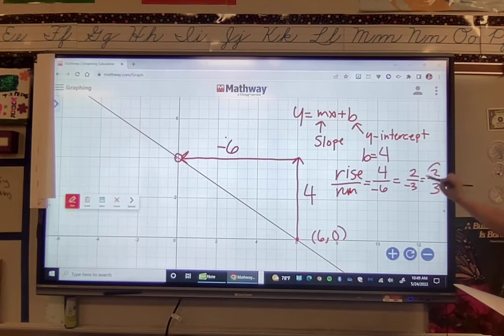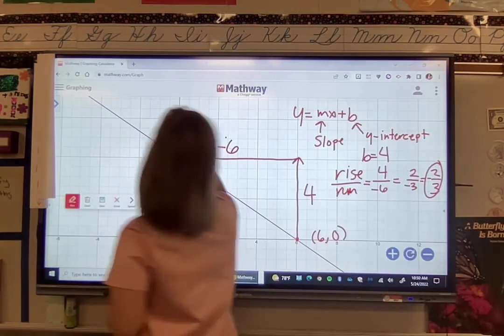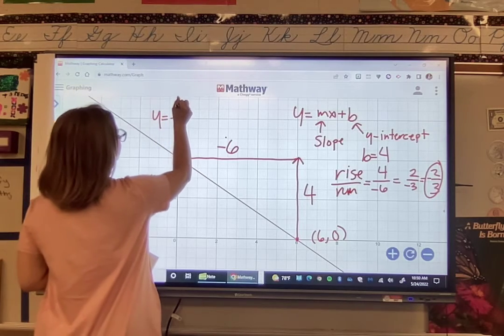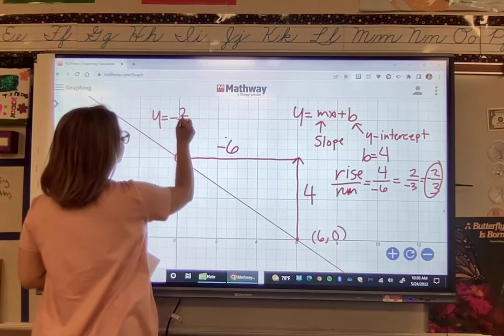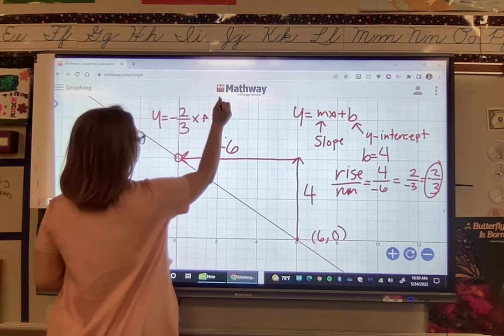So here we have the slope. So that'll make our equation, and I'll write it right up here, y equals negative 2 over 3x plus 4.